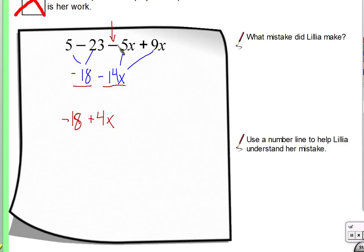So what mistake did Lilia make? She mistakenly added the 5x and the 9x and got negative 14x. She just added 5x and 9x and said, there's a negative, and I'll just carry that negative through. Help Lilia and maybe some of the rest of us understand why that's not correct. I want you to use a number line to explain why the result of negative 5x plus 9x should be a positive 4x. So draw a number line.